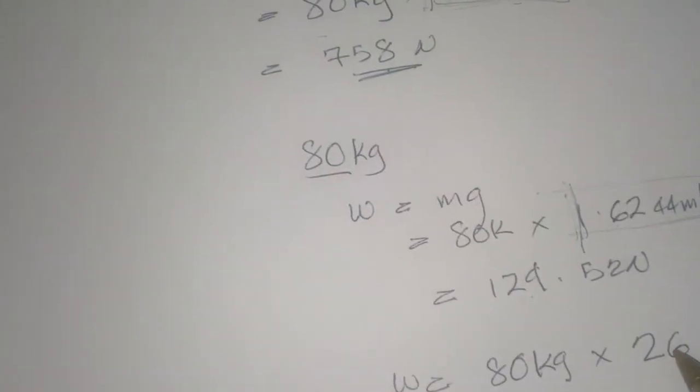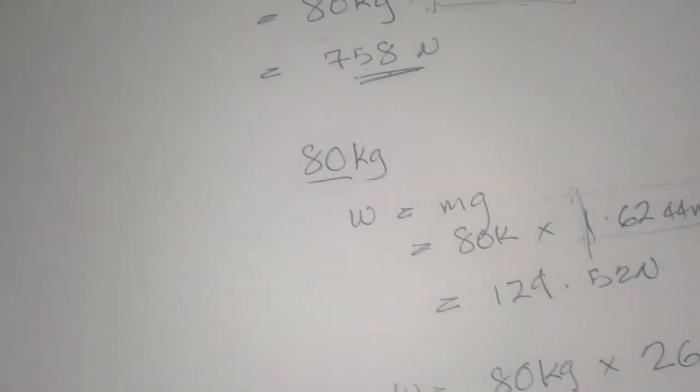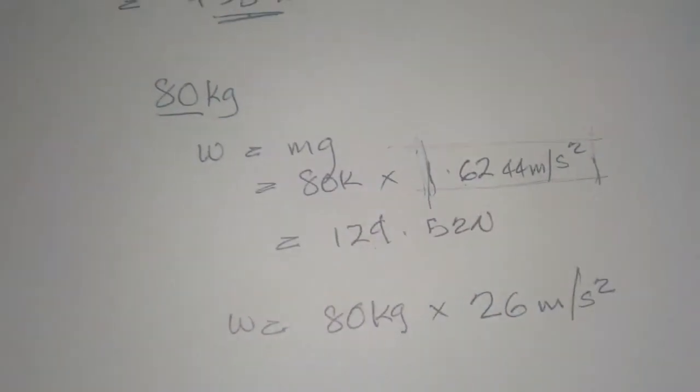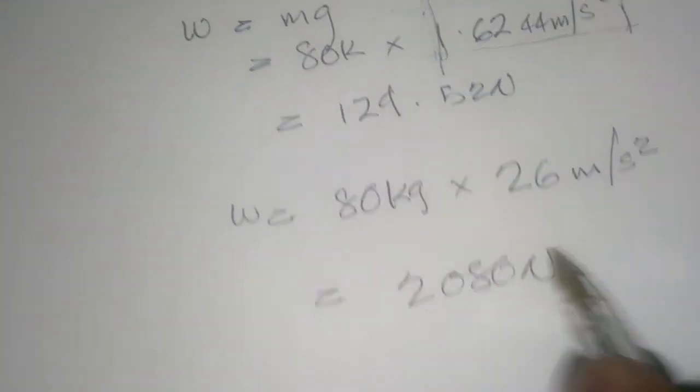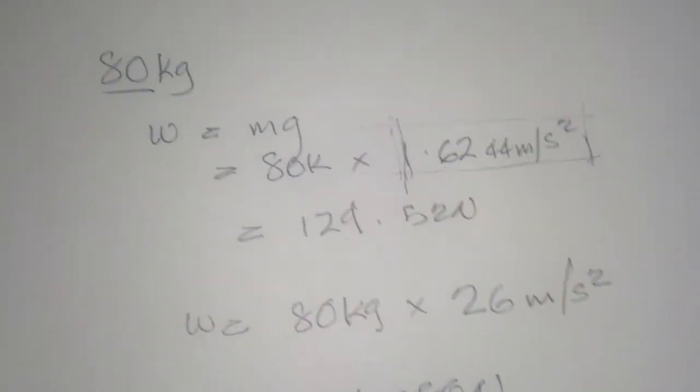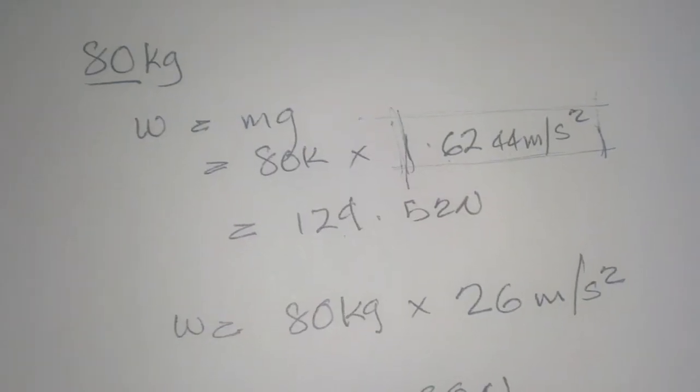If I went to Jupiter, which has a gravitational constant of 26 meters per second squared, I would weigh a whopping 2,080 Newtons. That's 2.6 times more than I weigh on Earth today.